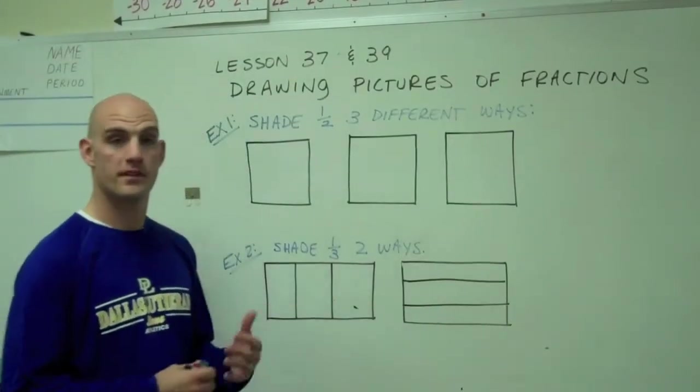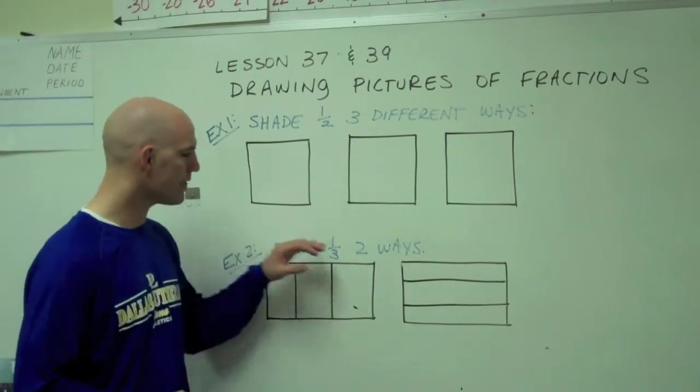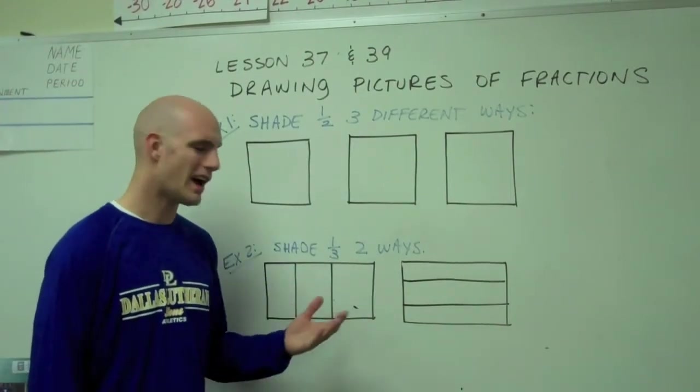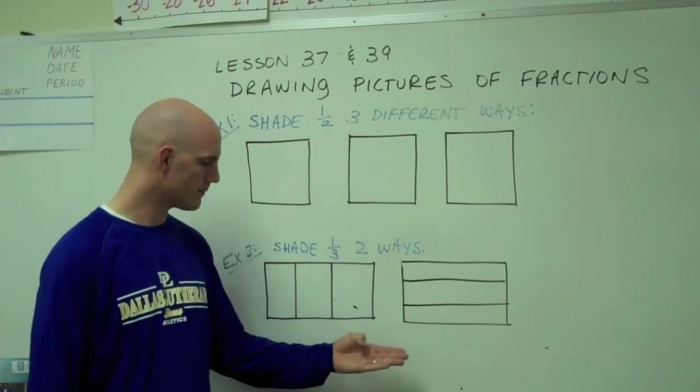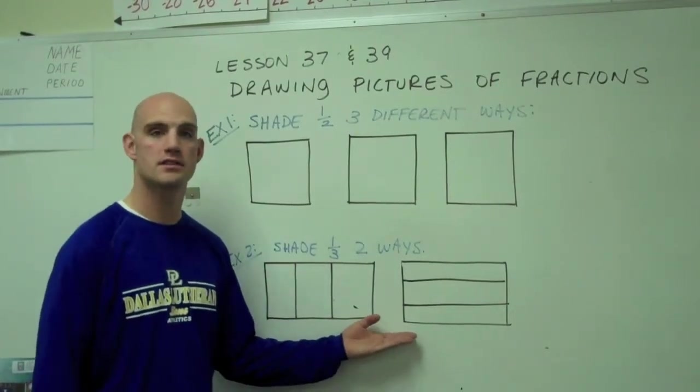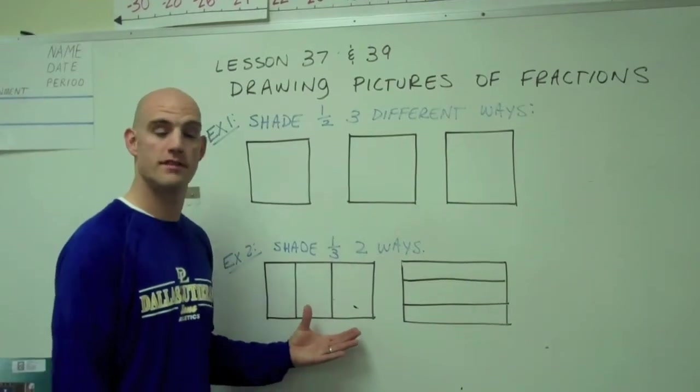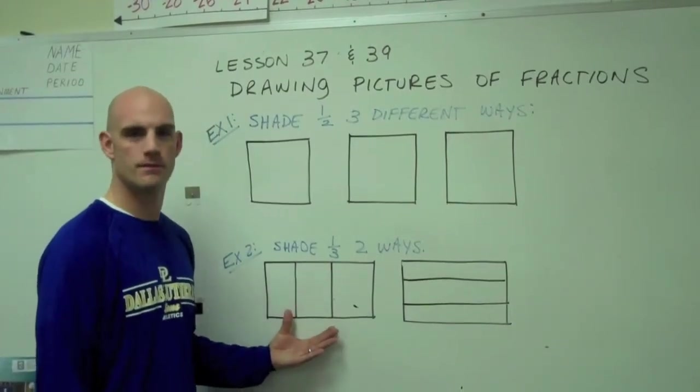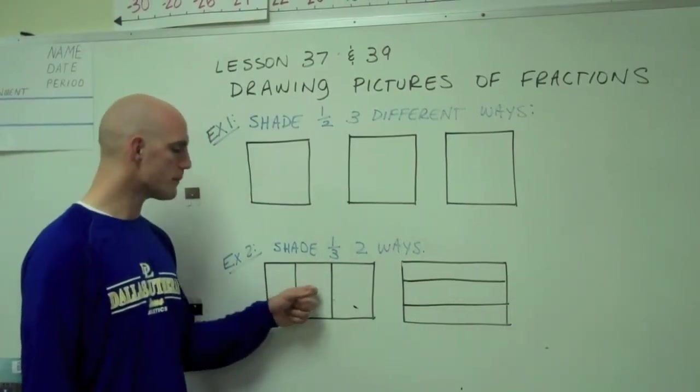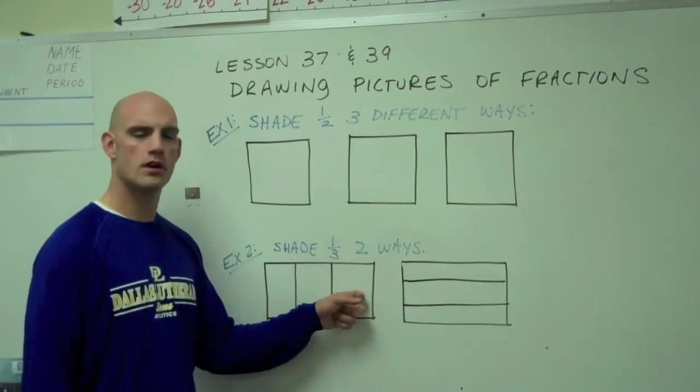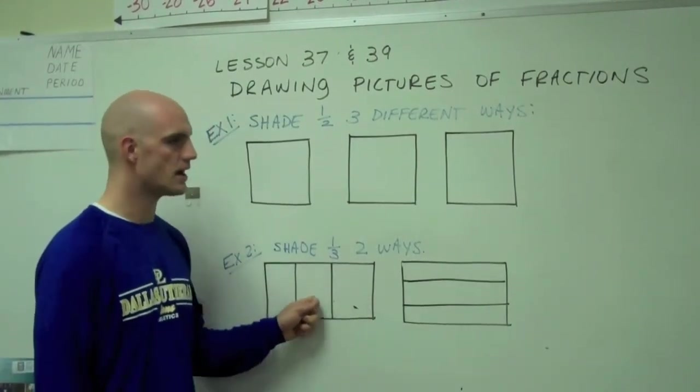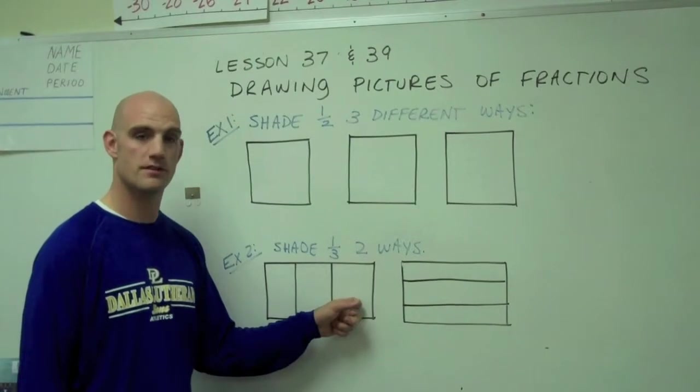Another example is to shade one third in two different ways. As you can see, I've drawn two big rectangles here. I've made them about the same size. I've chosen two different ways to divide them. The first way I've chosen to divide them is vertically. Remember, all three pieces are roughly the same size. We want to try to get as close to the same size as possible for each of the pieces we're dividing into.